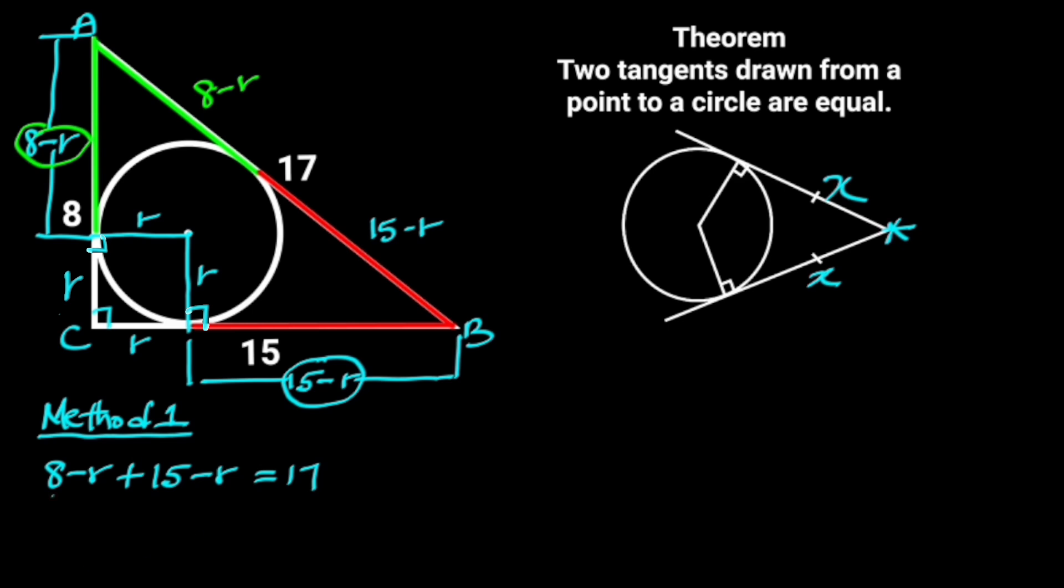Next we collect like terms. 8 plus 15 is 23. Minus R plus minus R is minus 2R. So 23 minus 2R is equal to 17. If we take 23 to the right, we will have minus 2R is equal to 17 minus 23.